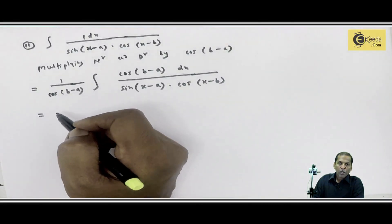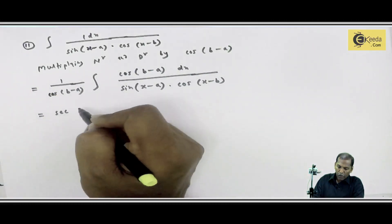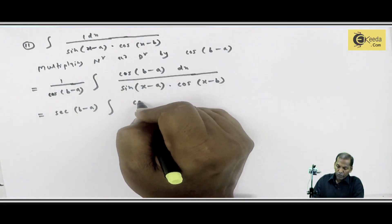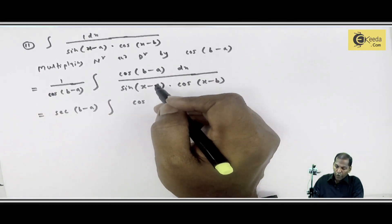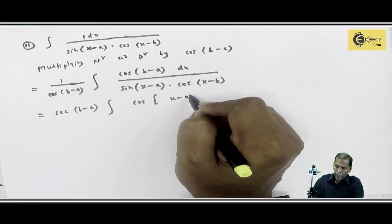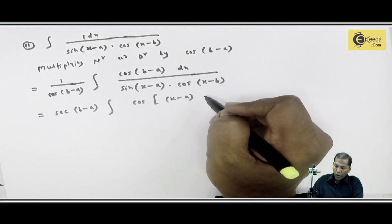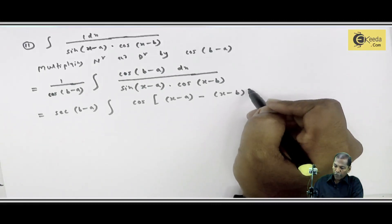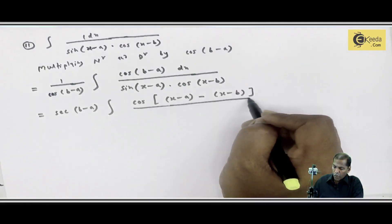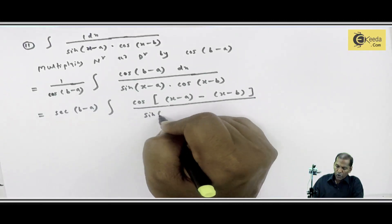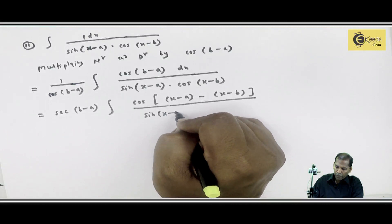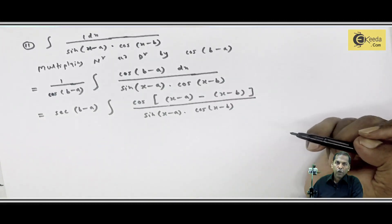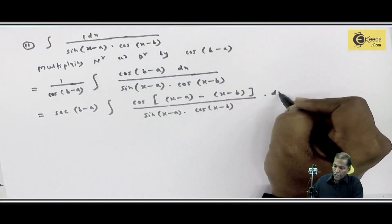So it is equal to 1 upon cos(b minus a), integral of cos(b minus a) in the bracket, upon sin(x minus a) into cos(x minus b). This is our integration, finally, into dx.